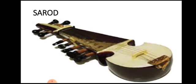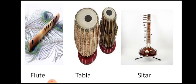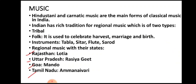The instruments used in classical music include sarod, flute, tabla, and sitar. These are not the only instruments used — there are several others — but I have given some examples here in this slide.